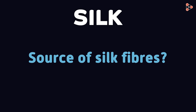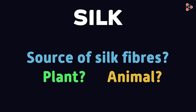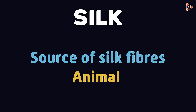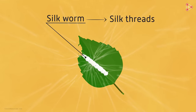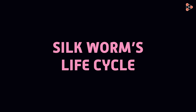To start with, can you tell me the source of silk fibers? Is it a plant or any animal? It's an animal. This small worm called a silkworm gives us silk threads. But how can we get threads from such tiny creatures, and how many threads can this little one give us? Let's get to know the complete process by understanding the silkworm's life cycle.